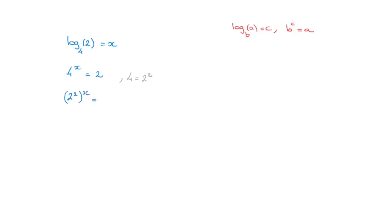This equals to 2. On the left-hand side, these exponents multiply together to give us 2 to the power of 2x equals to 2. And this 2 on the right-hand side — that's 2 to the power of 1. So we can go ahead and add that power 1.